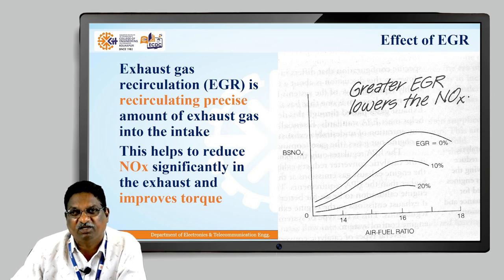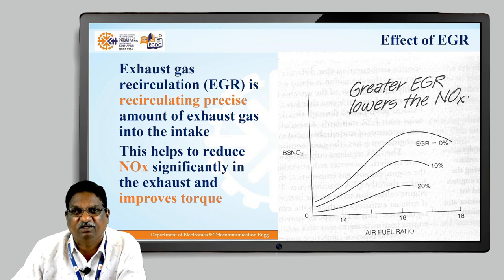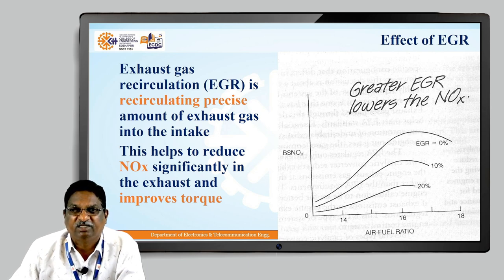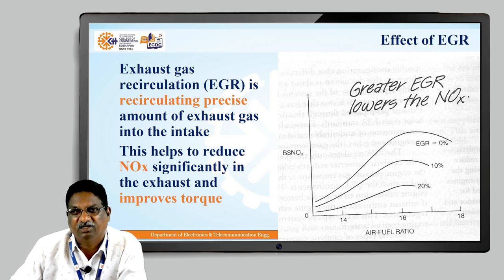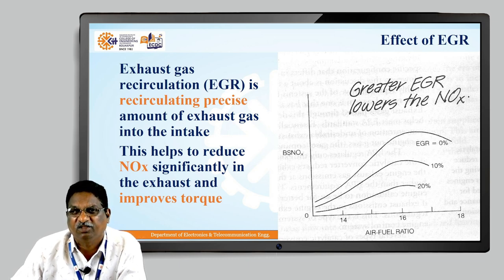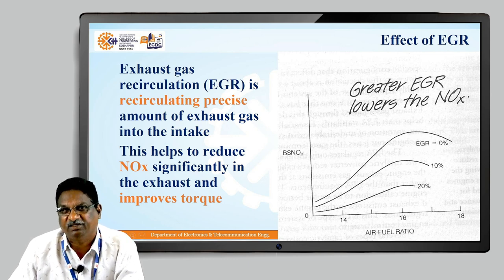What is the effect of exhaust gas recirculation (EGR)? Exhaust gas recirculation involves circulating a precise amount of exhaust gas back into the intake. This helps to significantly reduce NOx in the exhaust and improves torque. Therefore EGR is used in automotive engines. The greater the value of EGR, the lower the value of NOx.